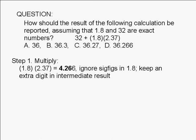This gives us 4.266. The rule for calculations using significant figures says that we should round off the result of multiplication to the same number of significant figures as the term with the fewer significant figures. The number 2.37 has three significant figures,